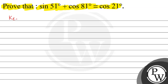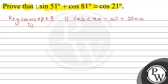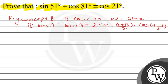First, I will tell you the key concepts that will help in this question. Key concept 1: cos(90° − x) = sin x. Key concept 2: sin A + sin B = 2 · sin((A+B)/2) · cos((A−B)/2).